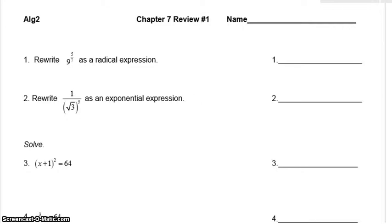So let's look at number 1. You'll have to rewrite an exponential expression as a radical expression. This denominator is going to tell you what kind of a root you have. It's a 7th root of 9, but we're going to be raising it to the 5th power.